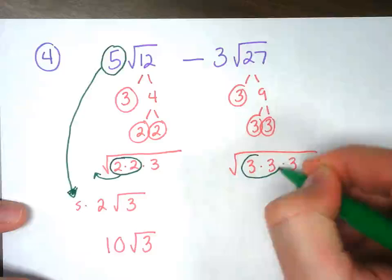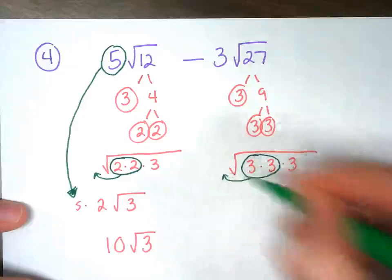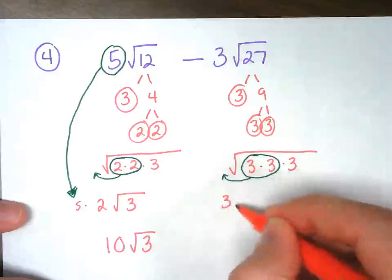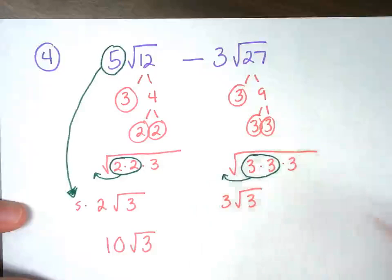We'll have a pair of 3s. It's going to come out to be, that pair of 3s comes out to be just 3, and then we still have the 3 on the inside.